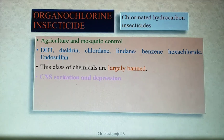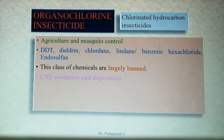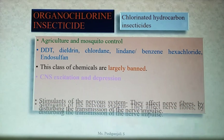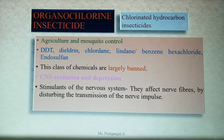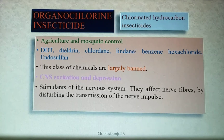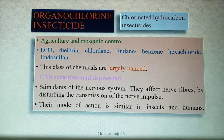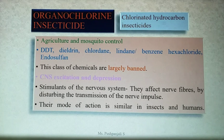Mode of action: In general, organochlorine insecticides cause either central nervous system depression or stimulation depending upon the agent and dose. The chlorinated hydrocarbons are stimulants of the nervous system. They affect nerve fibers by disturbing the transmission of the nerve impulse. Their mode of action is similar in insects and humans.